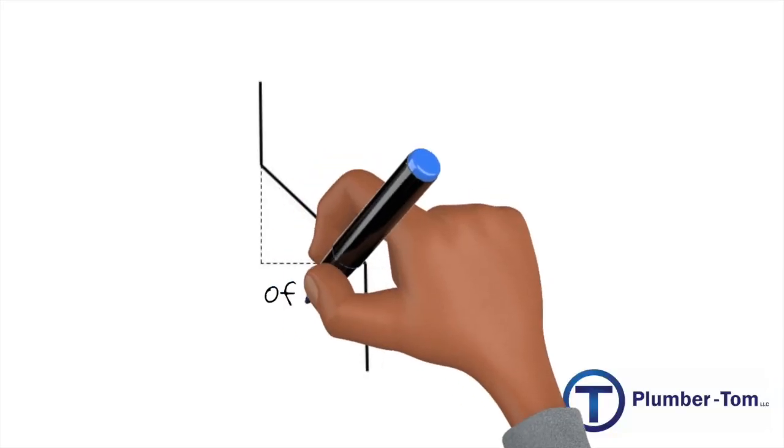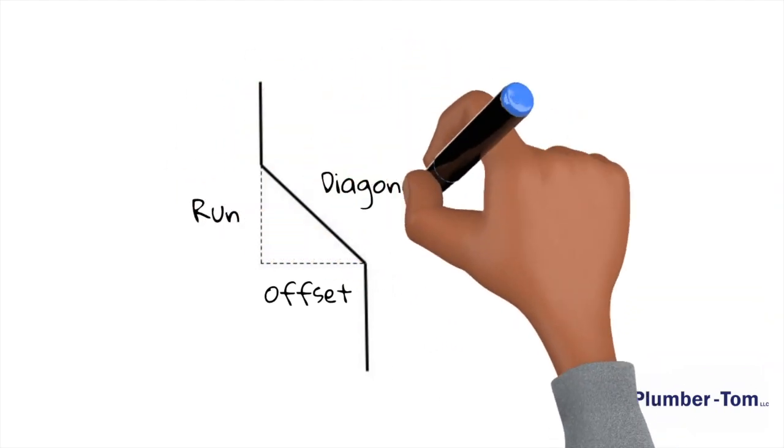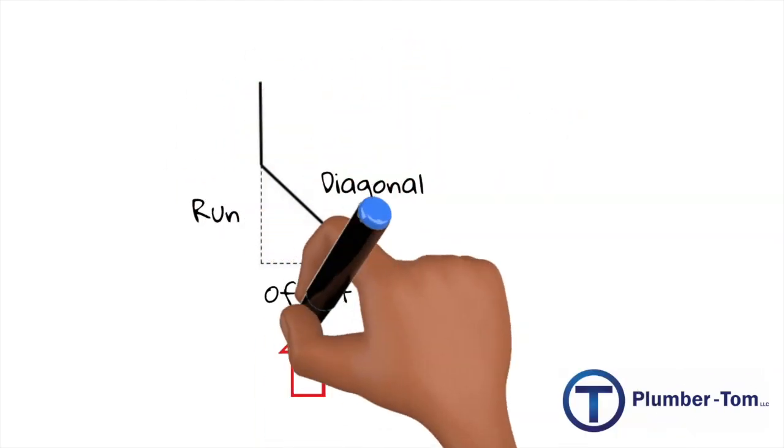In order to do the calculations relating to a 45 degree offset, we need to be able to visualize the triangle created by the offset. The angle pipe is the diagonal of the triangle. The offset is the distance the center of the pipe has moved over from its original location. The run is how far the pipe travels as it is angling over to a new center location.